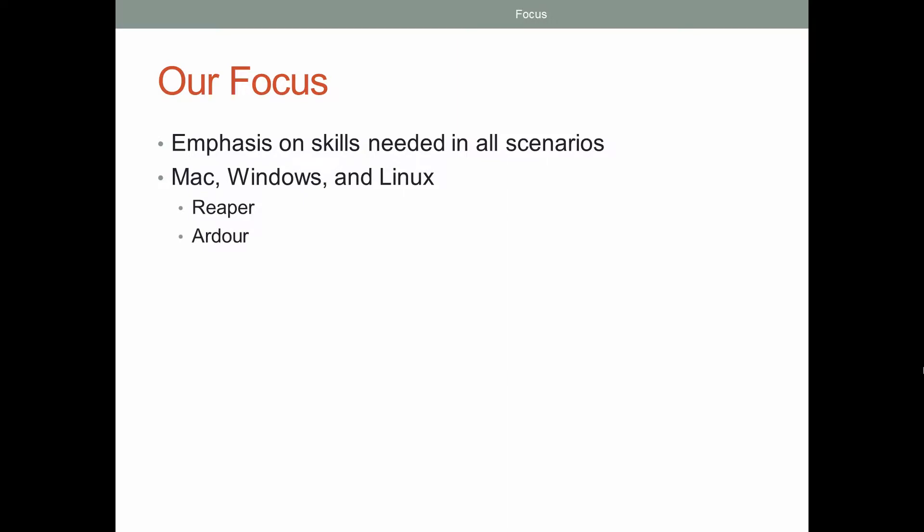Reaper is a commercial option available for all three platforms — you can run it through Wine on Linux. Ardour is open source and does not cost any money. Reaper costs about $60 and is about 6 megabytes, a lot smaller than Ardour. There's also LMMS, which stands for Linux Multimedia Studio. It's the option for pattern-based sequencing within Windows, Mac, or Linux, so it is cross-platform. You can also go in and edit the source code if you feel so inclined.